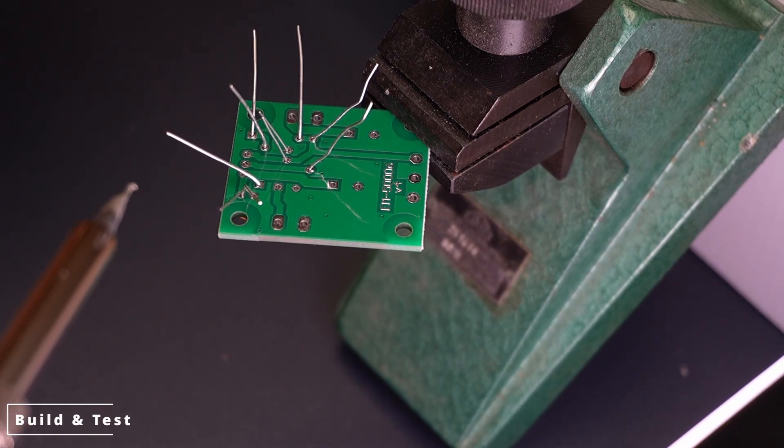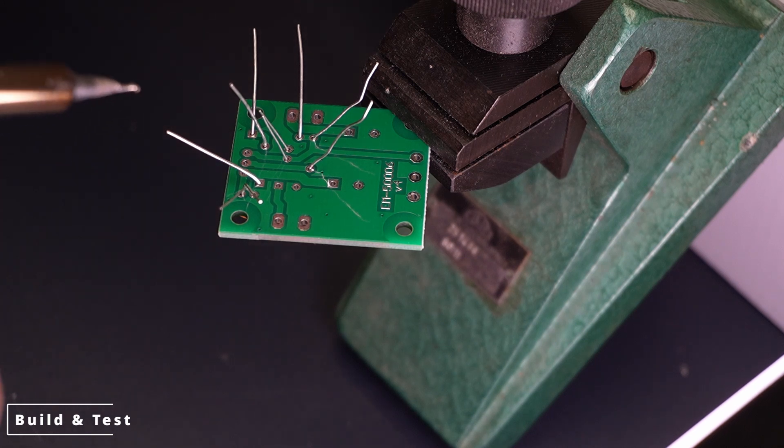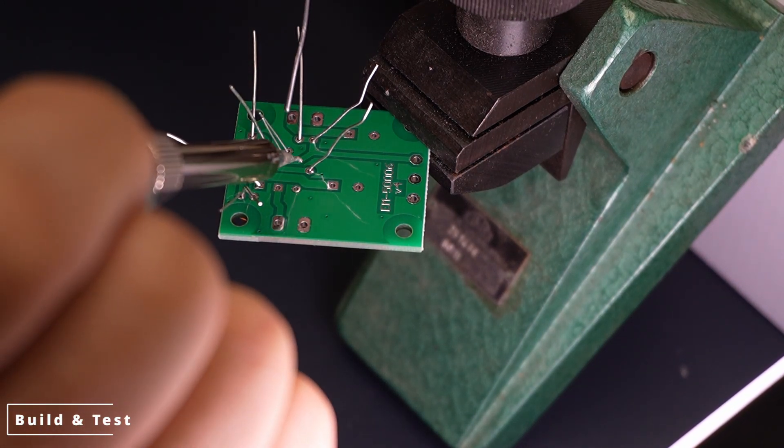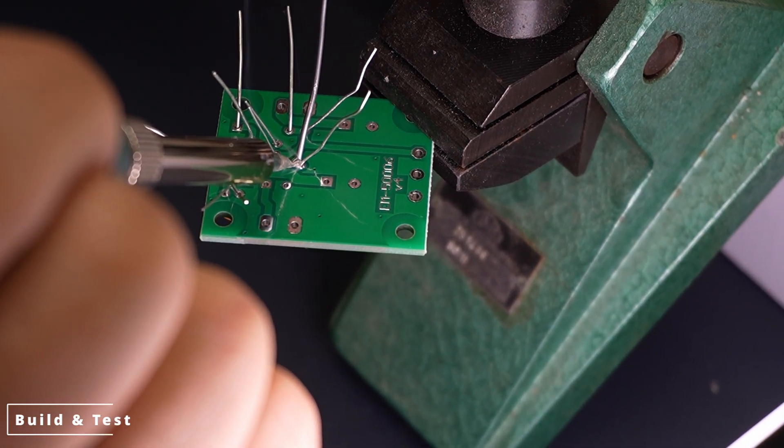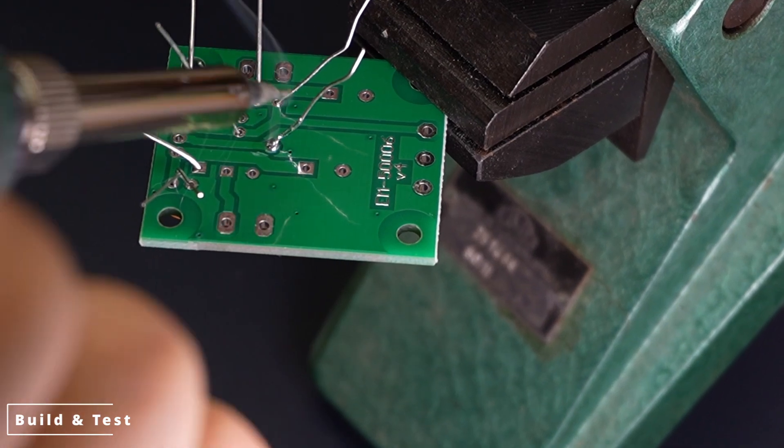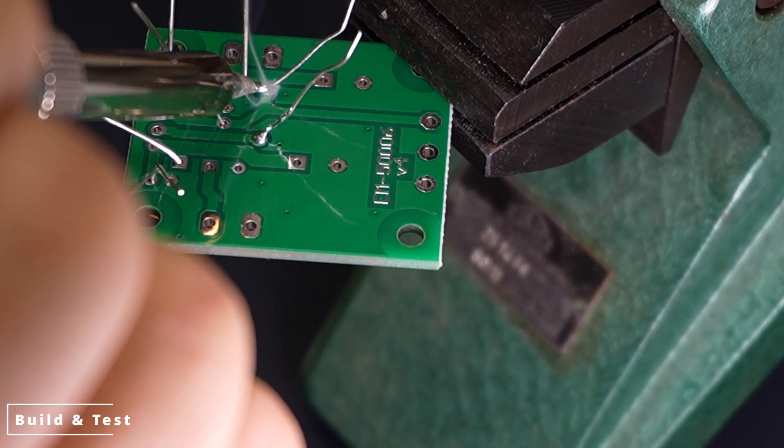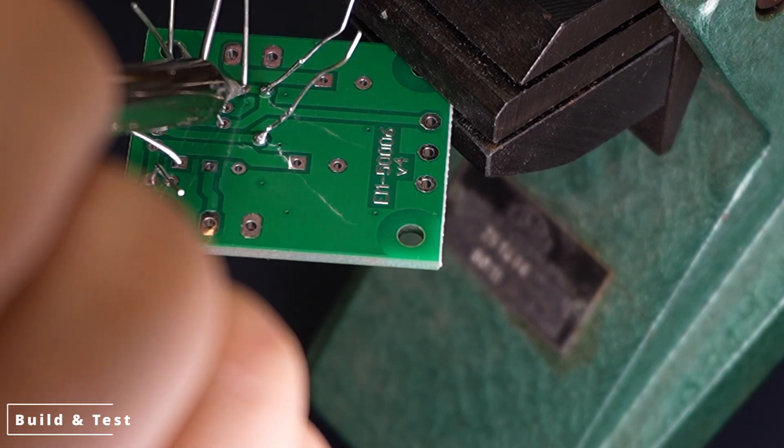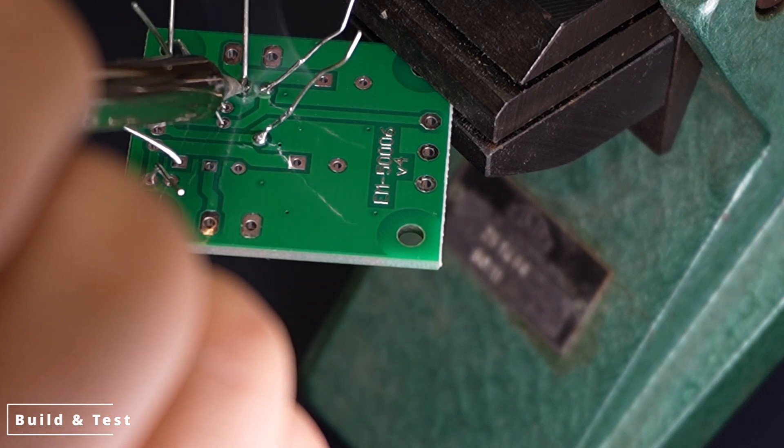Soldering process, starting steps, identifying the components. First let's check the components included in the kit such as resistors, capacitors, diodes and transistors. It's crucial to place everything in the correct position, so follow the circuit diagram carefully.